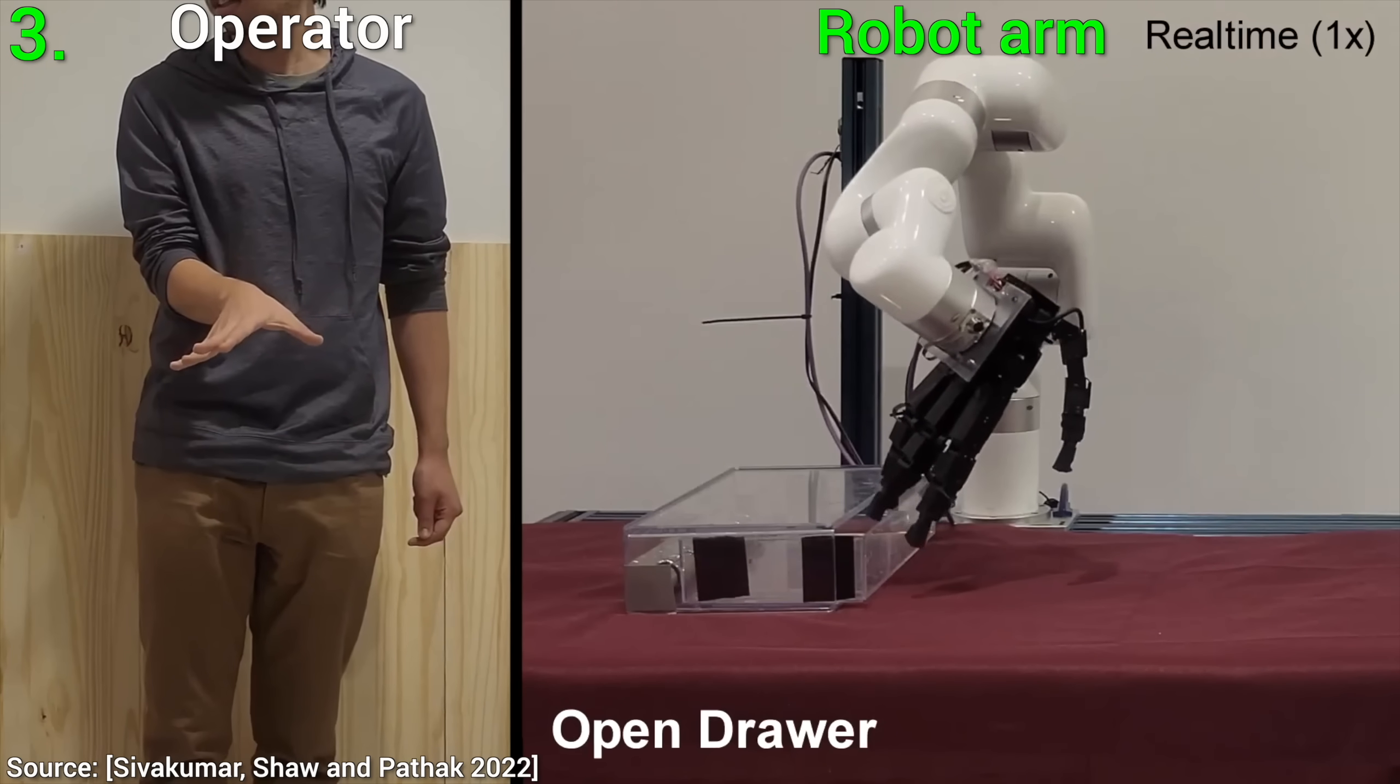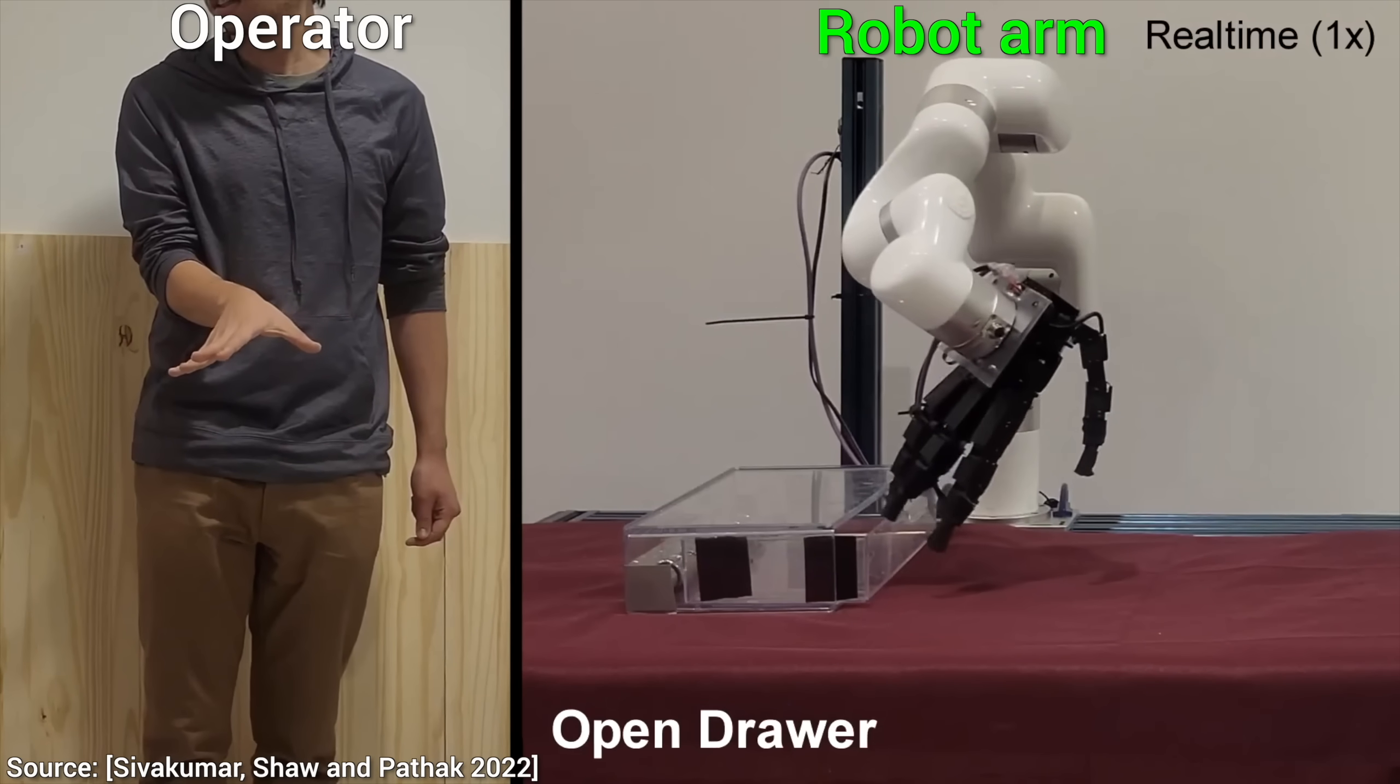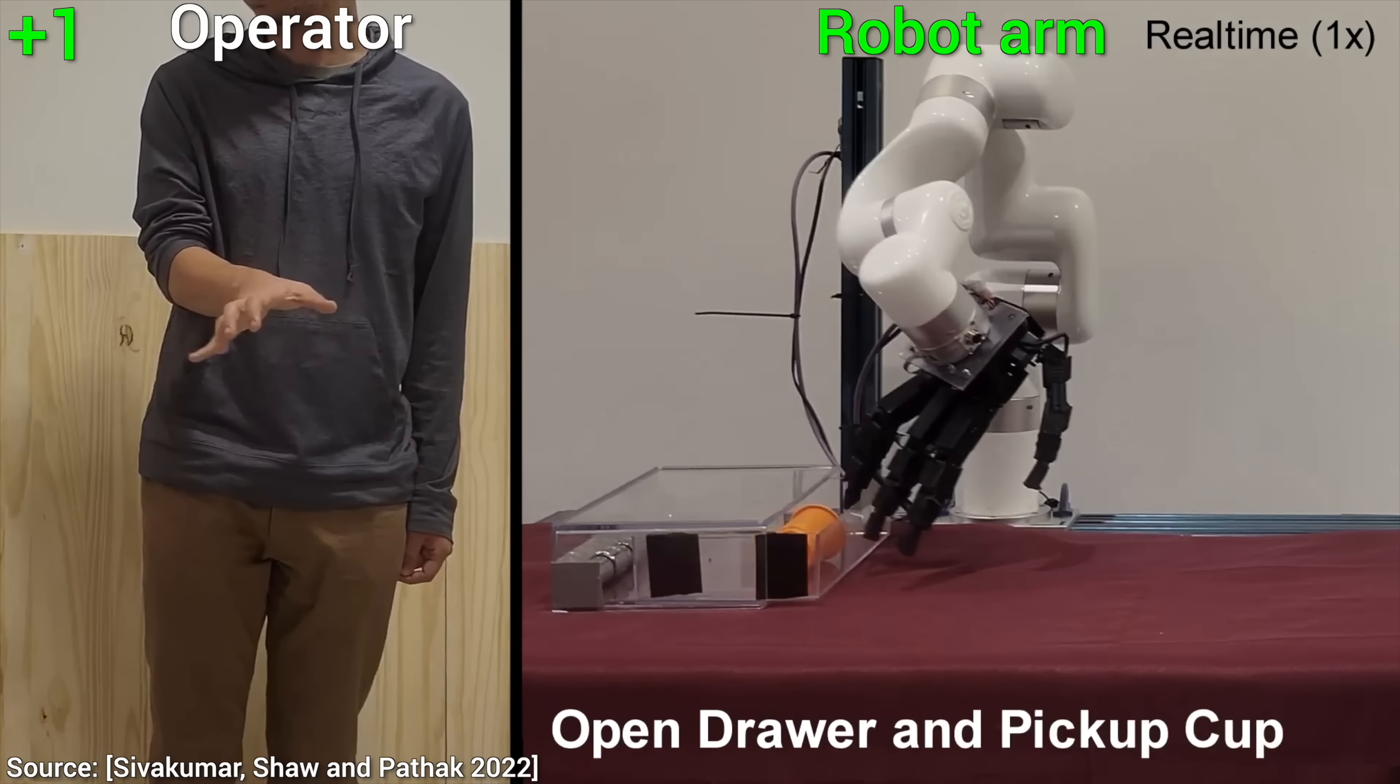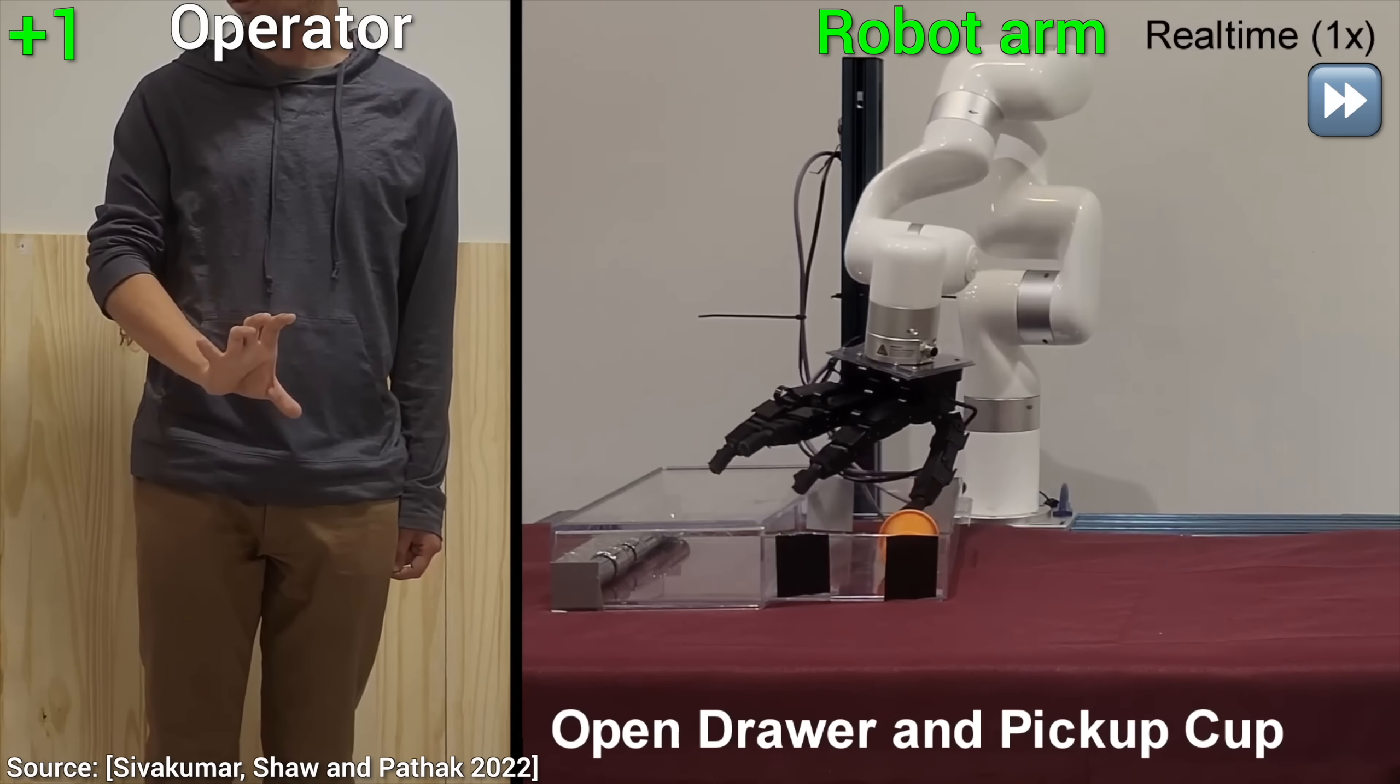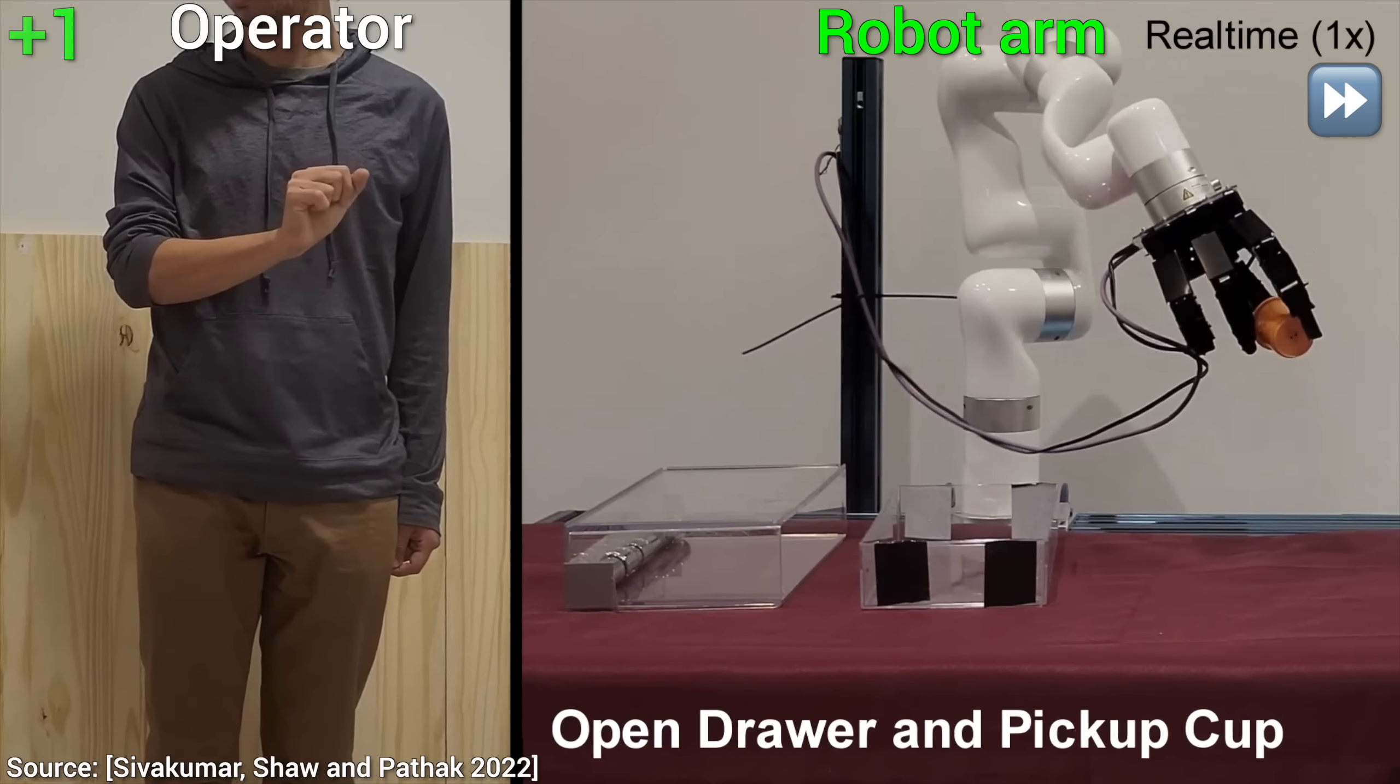But what good is opening a drawer if we aren't doing anything with it, so here comes plus one, the final boss level: open the drawer and pick up the cup. There is no way that this is possible through telekinesis. And oh my goodness, I love it.